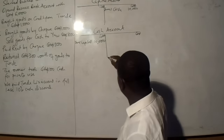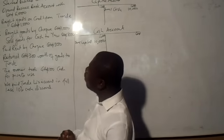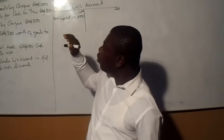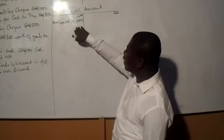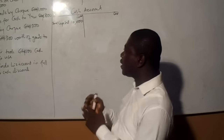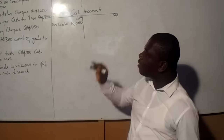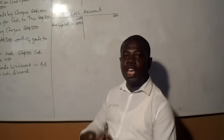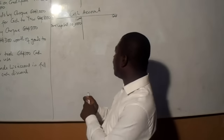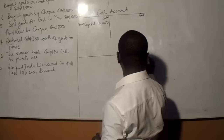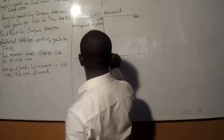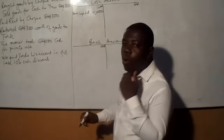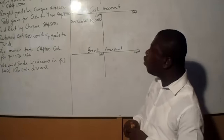The second transaction: open a business bank account with 6,000. This means some of the cash was transferred to the bank to open an account — 6,000. The two accounts involved here are bank and cash. Even though cash is not mentioned, it is the cash we started business with that we are using part of to open an account. We are going to open a bank account; we are not opening cash account again because we already have one.